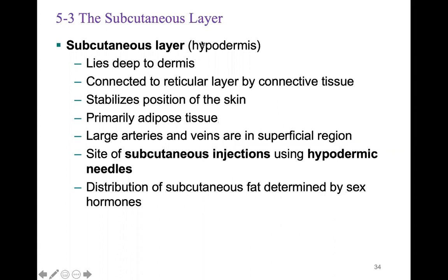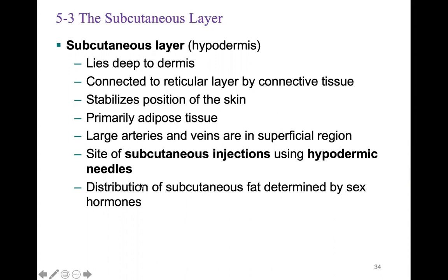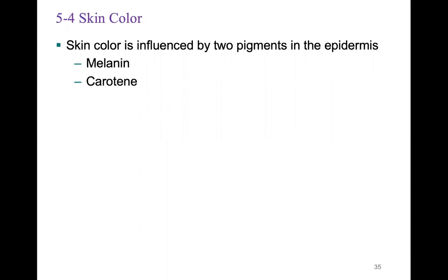The subcutaneous layer or hypodermis lies deep to the dermis and is connected to the reticular layer by connective tissue. It helps stabilize the position of the skin and is primarily composed of adipose tissue. Large arteries and veins are in the superficial region. This is also where hypodermic or subcutaneous injections are administered — such as when diabetics inject insulin into their belly. The distribution of subcutaneous fat is determined by sex hormones.